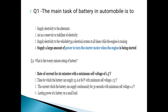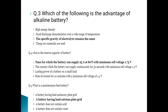Now let's do some MCQs. The main task of the battery in an automobile is to supply a large amount of power to turn the starter motor when the engine is being started. The 20-minute rating of a battery refers to the rate of current drawn for 20 minutes with a minimum cell voltage of 1.5V.